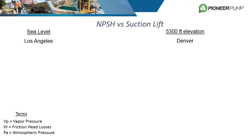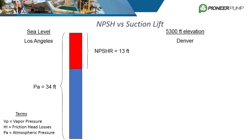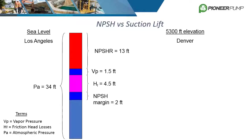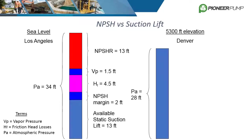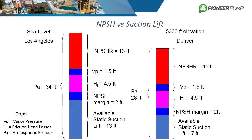To understand how elevation affects NPSH and static suction lift, let's compare max static lift in Los Angeles, near sea level, with max static lift in Denver at 5,300 feet above sea level. At sea level, the pump sees 34 feet of atmospheric head. Both sites use the same pump with NPSHR of 13 feet, vapor pressure head of 1.5 feet, friction losses of 4.5 feet, and an NPSH safety margin of 2 feet — giving a maximum static suction lift of 13 feet. In Denver, the pump only sees about 28 feet of atmospheric head, leaving the maximum static suction lift at only 7 feet. Pumps cannot pull as much static lift at higher elevations.